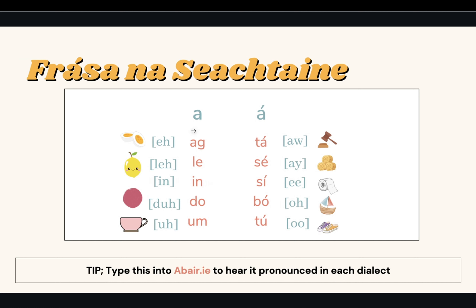Looking at the difference again: the A in 'ag' is short — just 'a,' like 'egg.' And in 'tá' it's long — 'ay,' so 'tá.' 'Le' has a short E — 'le.' And 'sé' is long — it gets an 'ay' sound. Short I in 'in,' whereas the I in 'sí' is long, so it's 'sí.' Short O in 'do,' and then long Ó in 'bó.' And the short U in 'um,' then in 'tú' it's long — 'oo,' 'tú.' So: ag, tá, le, sé, in, sí, do, bó, um, tú — that just emphasises the difference between the short and the long.